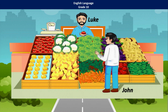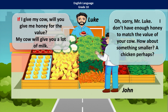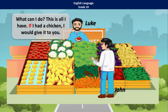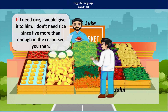Here you can see Luke and Joan. Let us listen to their dialogue. 'If I give my cow, will you give me honey for the value? My cow will give you a lot of milk.' 'Oh, sorry, Mr. Luke. I don't have enough honey to match the value of your cow. How about something smaller? A chicken, perhaps? What can I do? This is all I have. If I had a chicken, I would give it to you.' 'Then there's no deal. If I were you, I would give this cow to Farmer Stephen. He would give you some bags of rice.' 'If I need rice, I would give it to him. I don't need rice since I have more than enough in the cellar.' 'See you then.' 'Okay, see you later.'